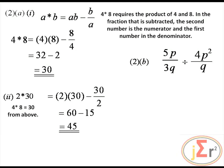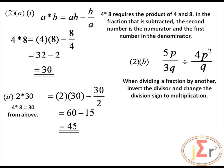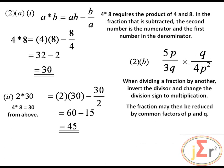We have an algebraic expression of algebraic fractions and are expected to express it in its simplest form. We are dividing, so we will invert and multiply. Dividing by a fraction is equivalent to multiplying by its reciprocal. When dividing a fraction by another, invert the divisor and change the division sign to multiplication. The fraction may then be reduced by a common factor of P and a common factor of Q.